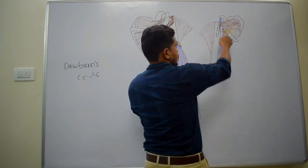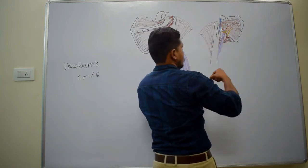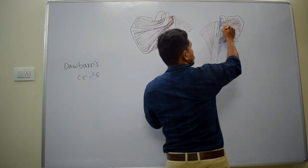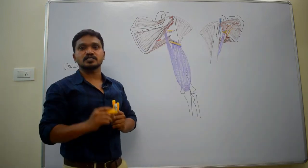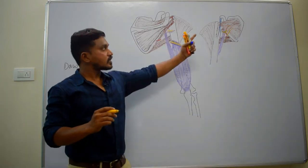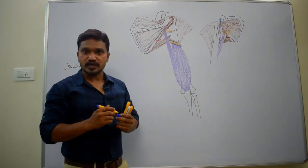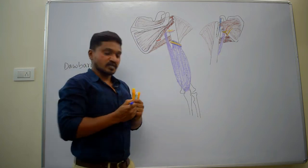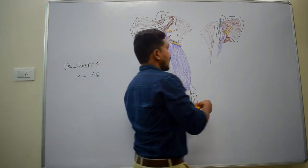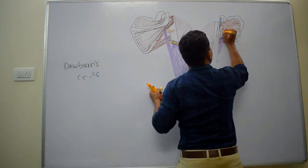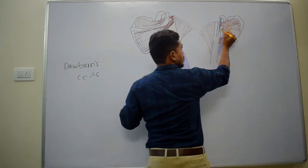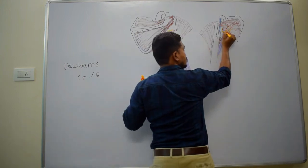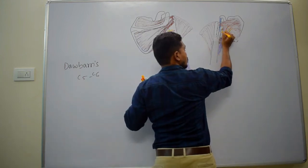When it is winding around the lower border of the subscapularis muscle, it is in intimate relation with the capsule of the shoulder joint. There it gives a branch to the shoulder joint. After that, it enters into the quadrangular space.